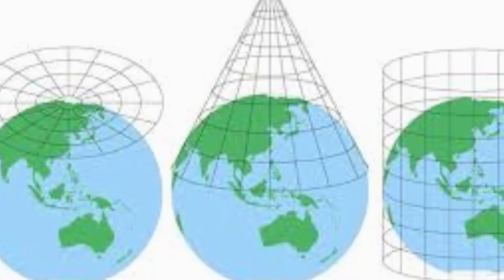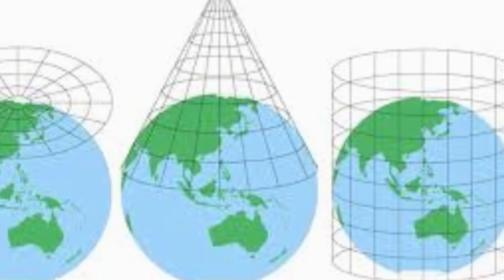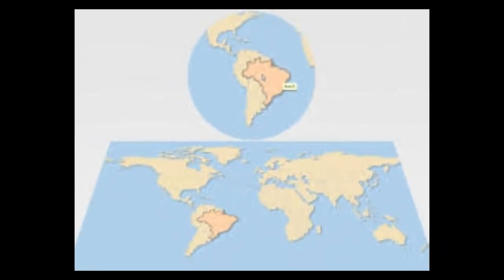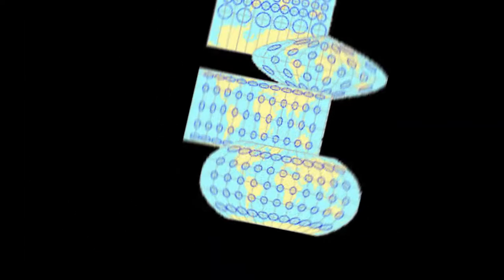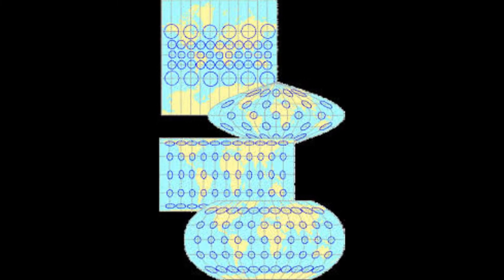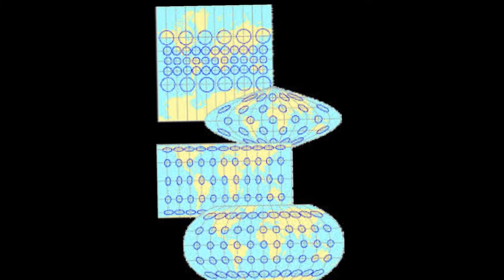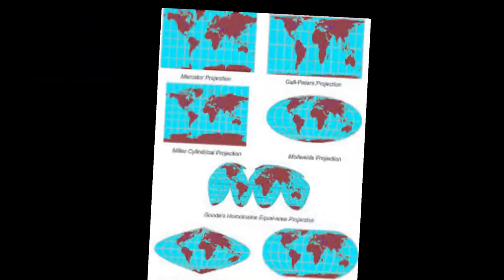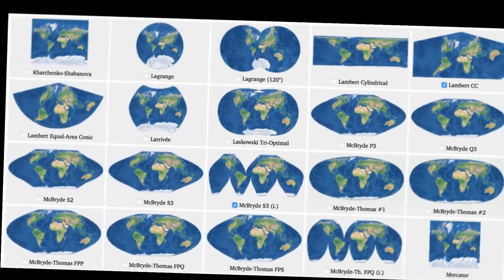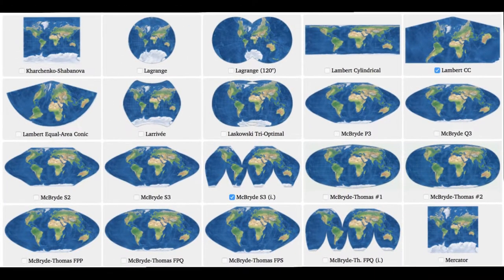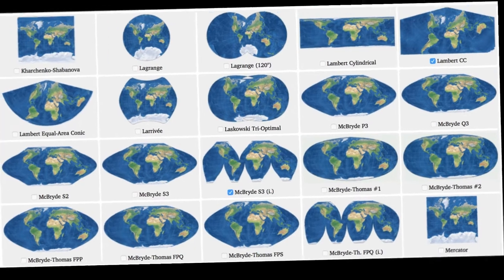Try as you might, you just cannot flatten an orange peel without tearing, squashing, or stretching. When cartographers try to flatten the earth for a map projection, distortions in terms of shape, distance, directions, or land area are inevitable. Depending on the purposes they are trying to serve, the number of possible map projections is limitless. However, which map projection should be used for general purposes? Here are some map projections which we will talk about.